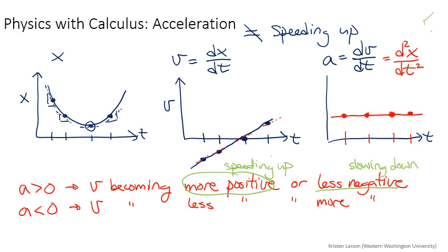Similarly, less positive is slowing down, and more negative is speeding up. It's just speeding up in the negative position direction.